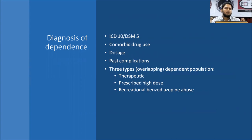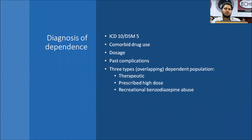The second type is prescribed high-dose dependence: a patient prescribed 1 mg progressively escalates to 2, 3, or 4 mg, changing doctors to obtain repeated prescriptions. The third type is recreational benzodiazepine use — typically polysubstance dependent individuals, including those taking opioids in combination with benzodiazepines.